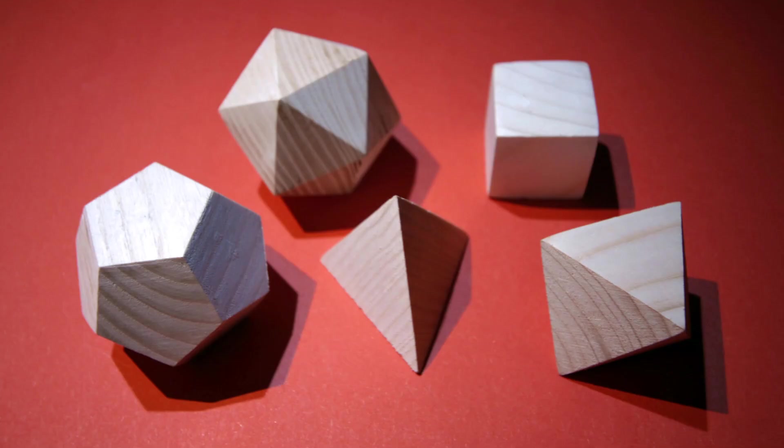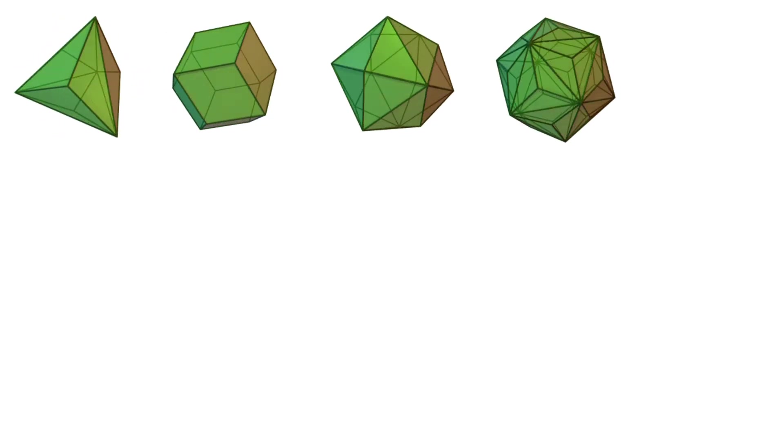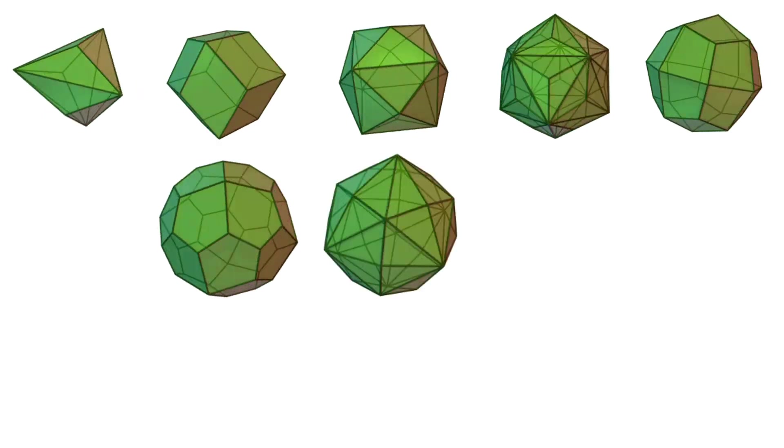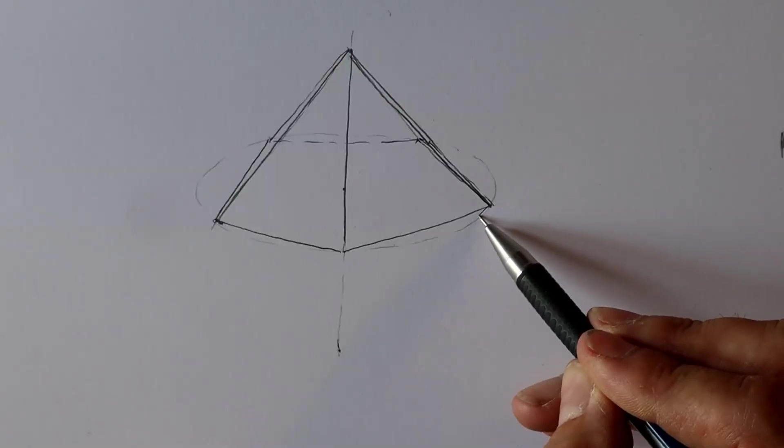There are exactly five solids that are composed of identical regular polygons, the platonic solids. But a large number of polyhedrons is possible if one allows irregular but still identical polygons. This results in the thirteen Catalan solids, for example.